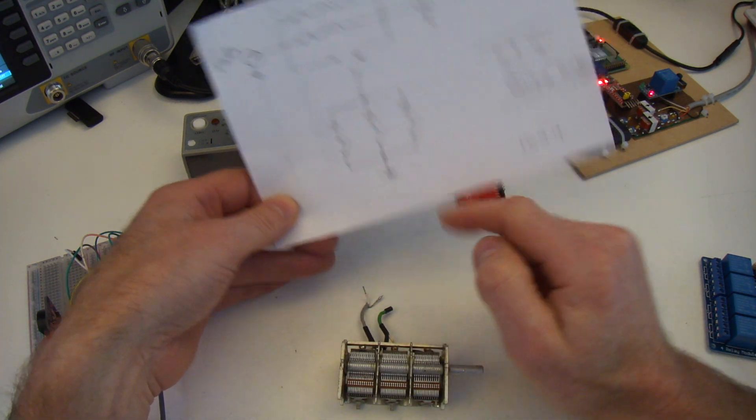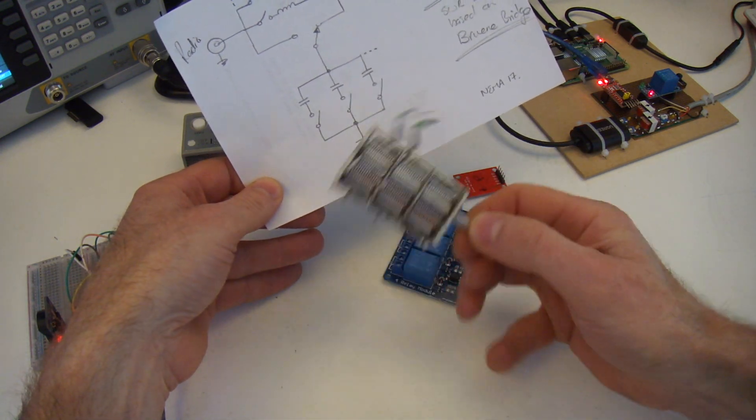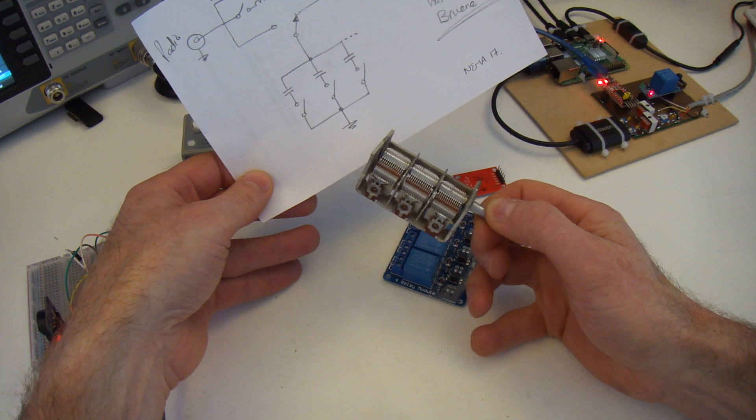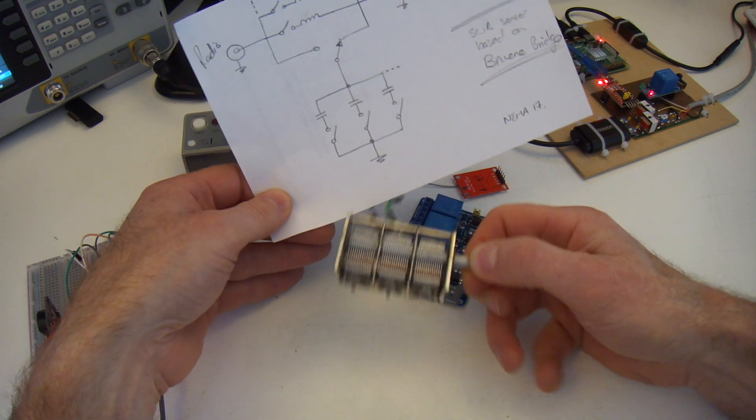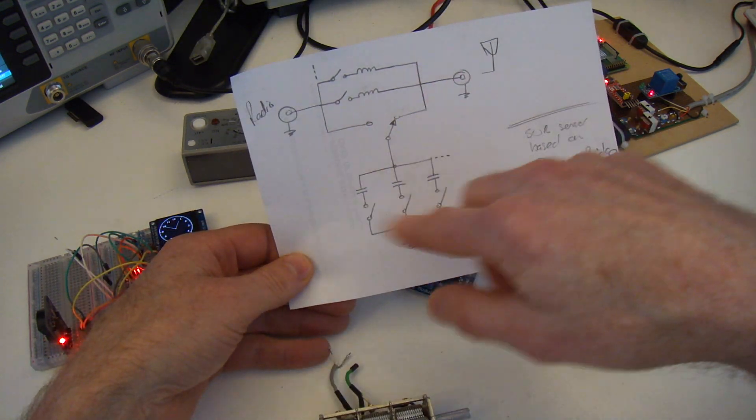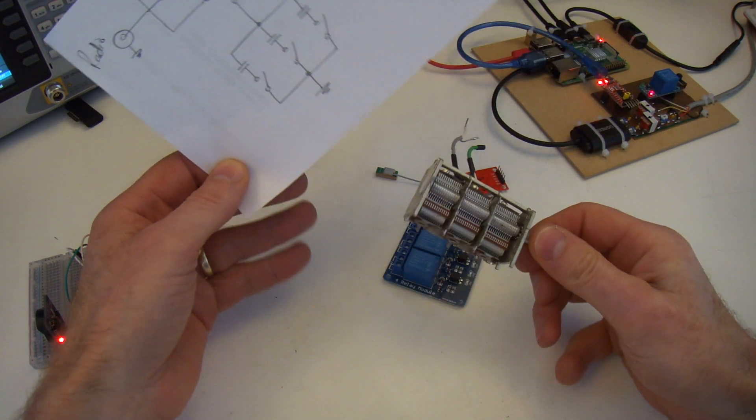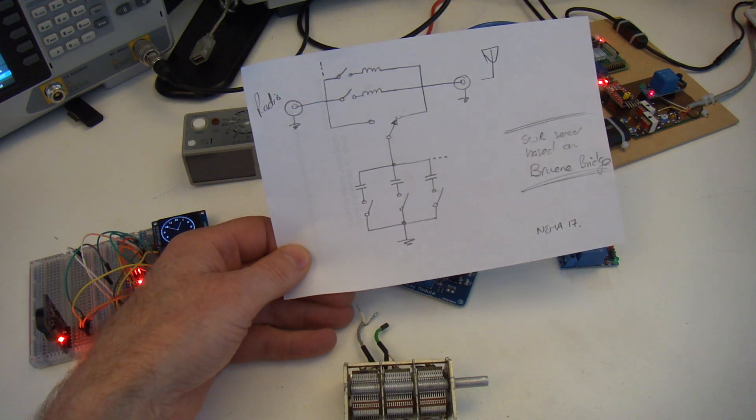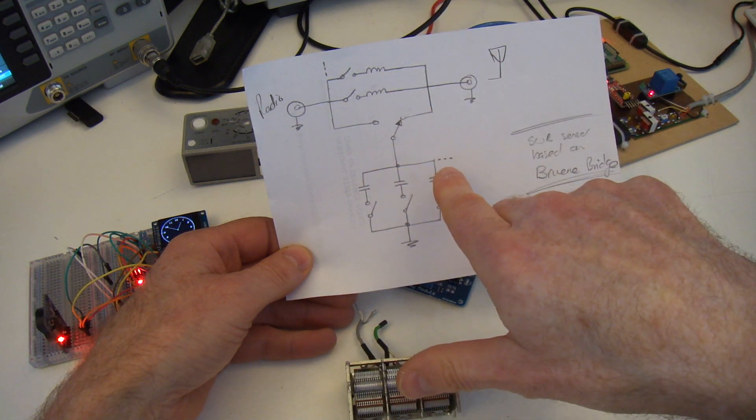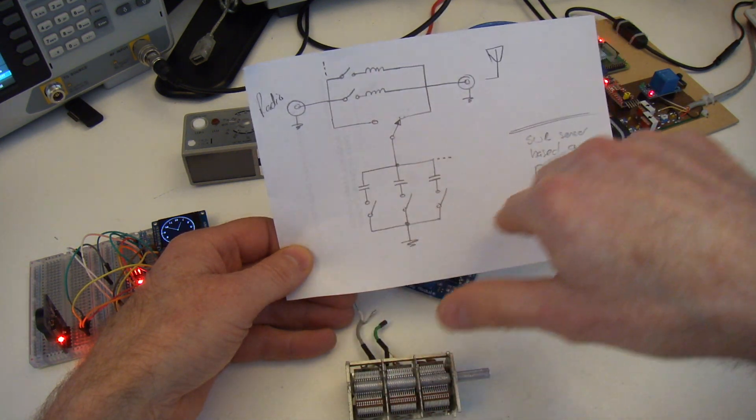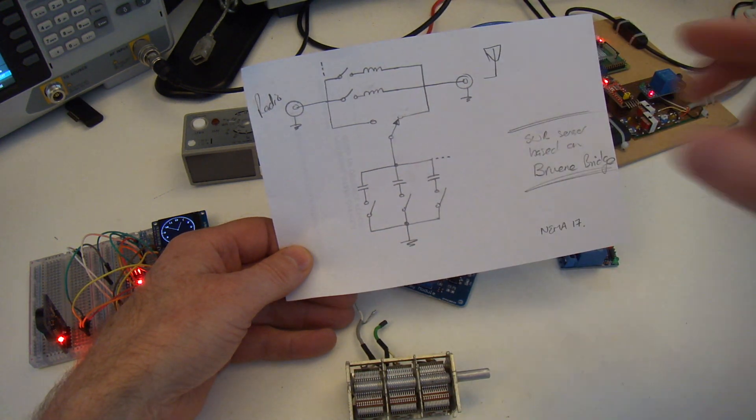I suspect this method here using the relays will be quite fast in terms of switching those in and out, whereas the stepper motor driven capacitor may be a bit slower in terms of coming up with a solution by means of the lowest SWR. So I don't know if anybody else had experience in that, I'd be keen to know. Otherwise, it's all about experimenting. So I'll make something up and start to play around with. That's the first project I wouldn't mind doing sooner rather than later because I haven't done that before.